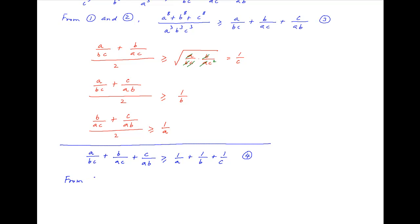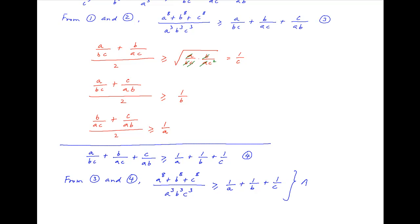Now, combining Results 3 and 4, it follows that the left-hand side of Result 3, which is a⁸ + b⁸ + c⁸ upon a³b³c³, is greater than or equal to the right-hand side of Result 4, which is 1/a + 1/b + 1/c. And this is the required result.